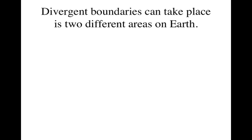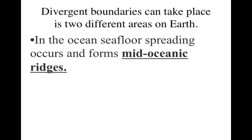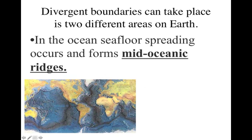Now, divergent boundaries can take place in two different areas of the Earth. The first is if it happens in the ocean. We actually call it seafloor spreading because the seafloor appears to be spreading apart, and it forms a mid-oceanic ridge. Make sure you write down: in the ocean you get a mid-oceanic ridge. Here is a picture of the globe from a satellite, and you can see these lines are actually underwater mountains or ridges that are forming as the plates spread apart.